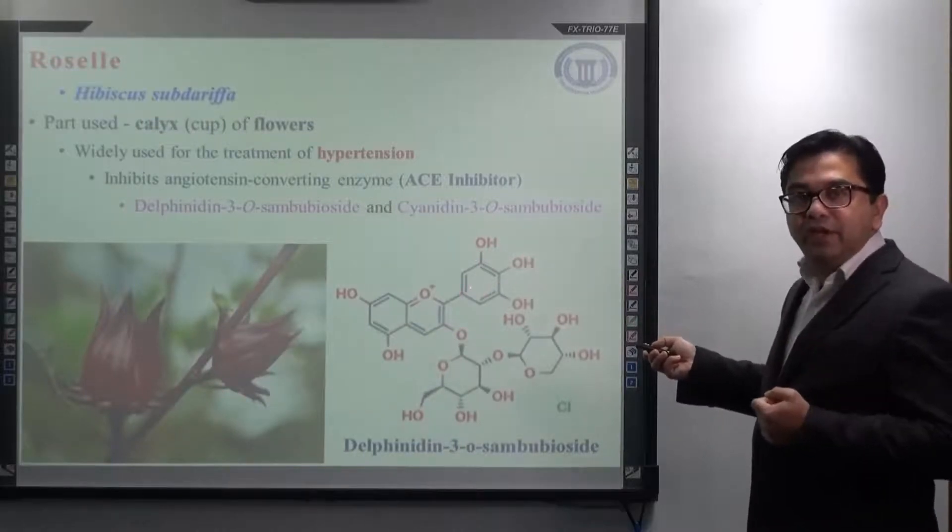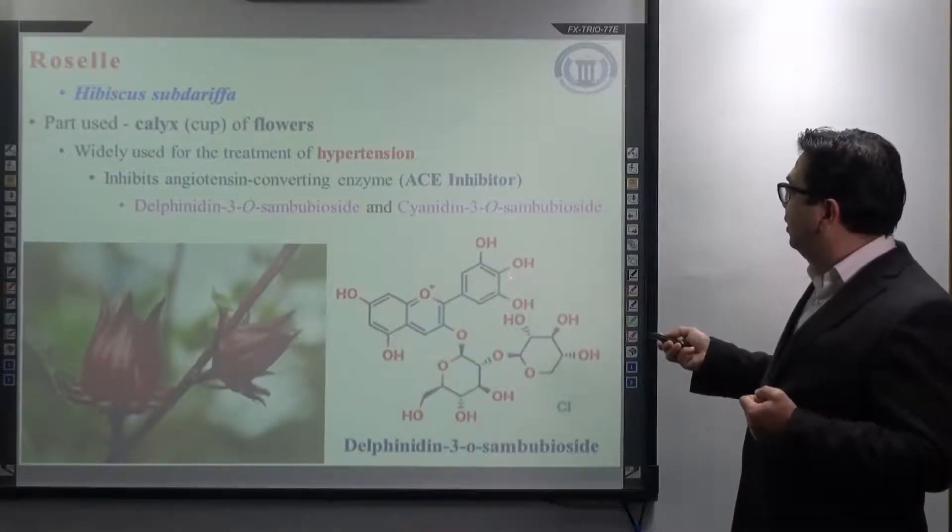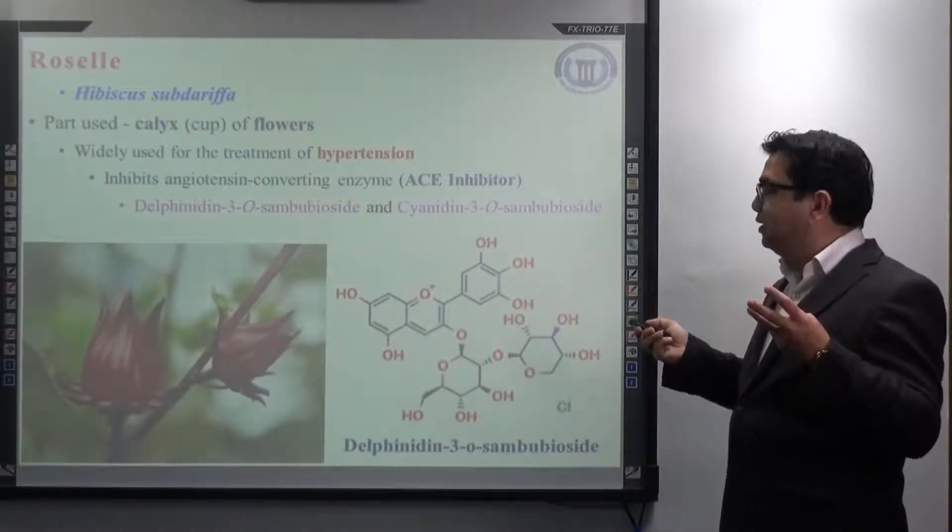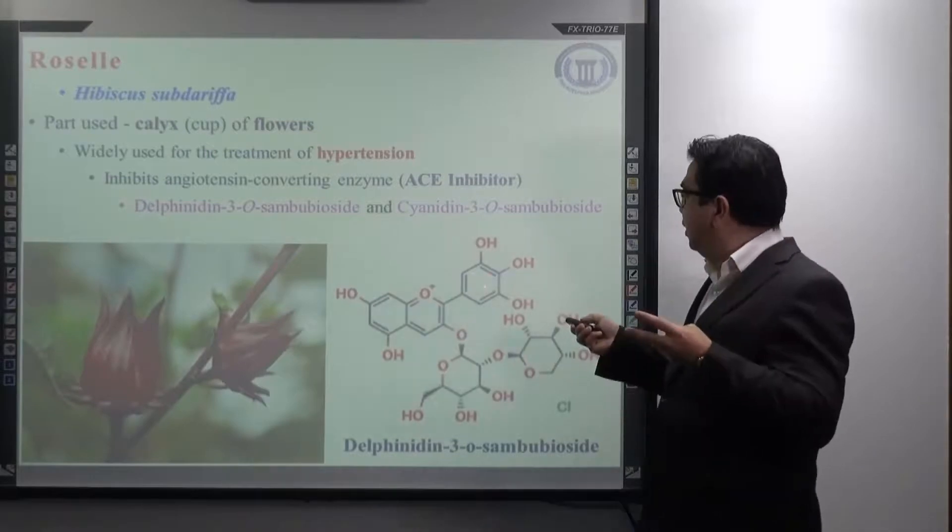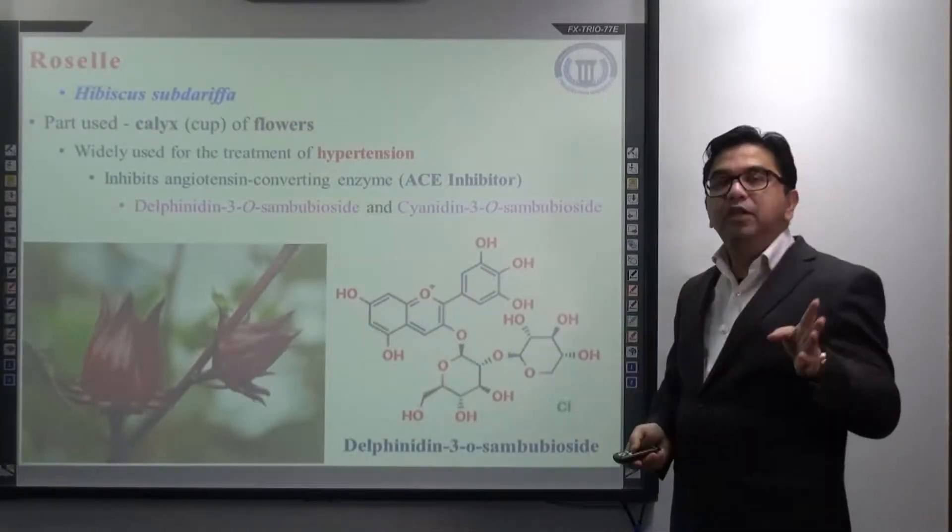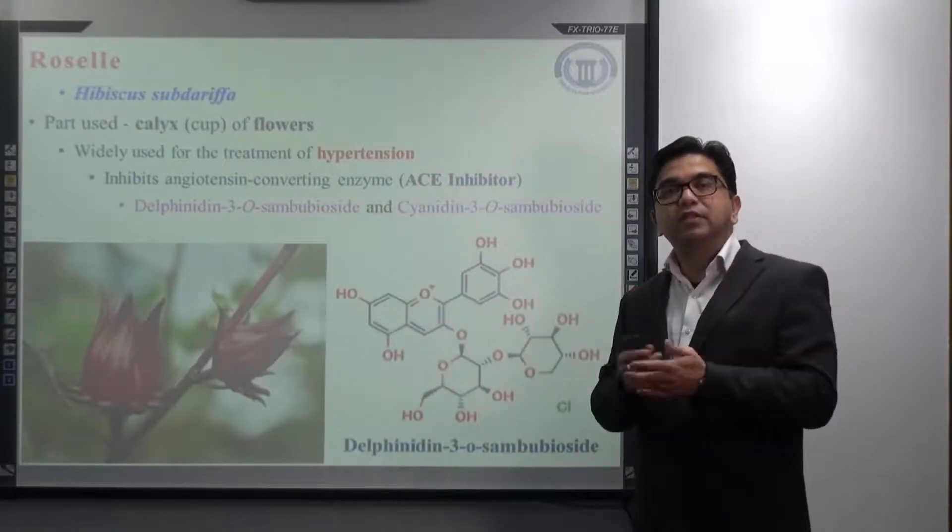The difference between cyanidin and delphinidin, if you remember, delphinidin has three - sorry, cyanidin has two OH groups in the ring, whereas delphinidin has three OH groups. That is the only difference. Otherwise, the whole structure is almost same.